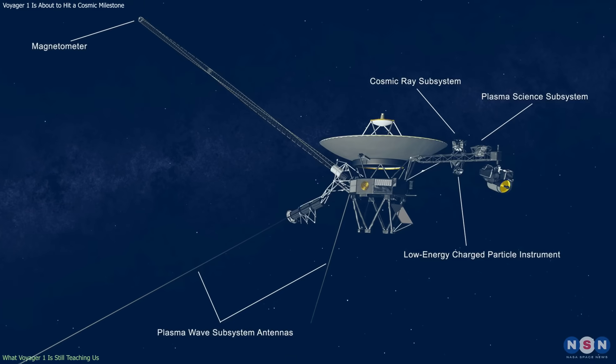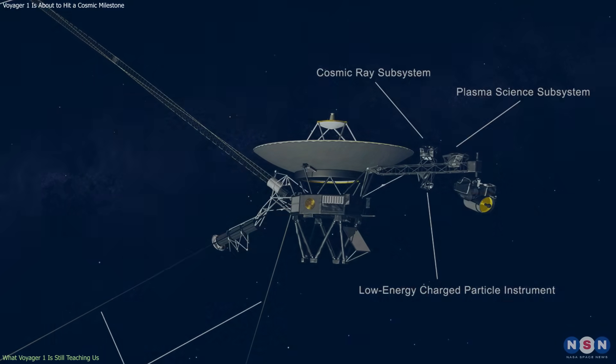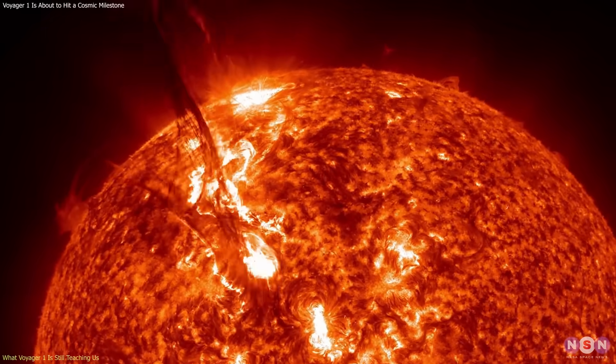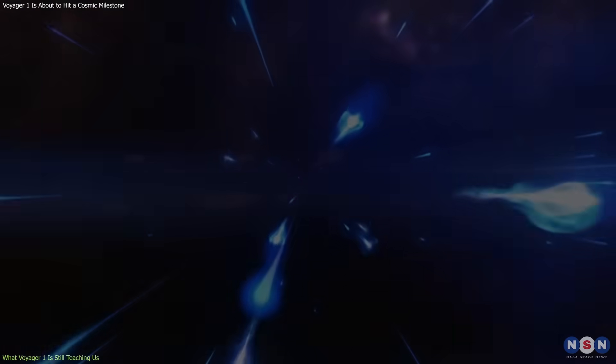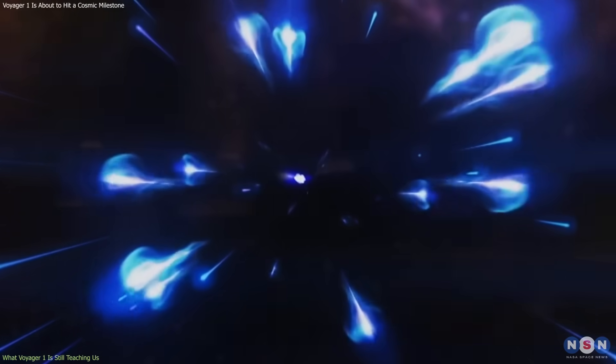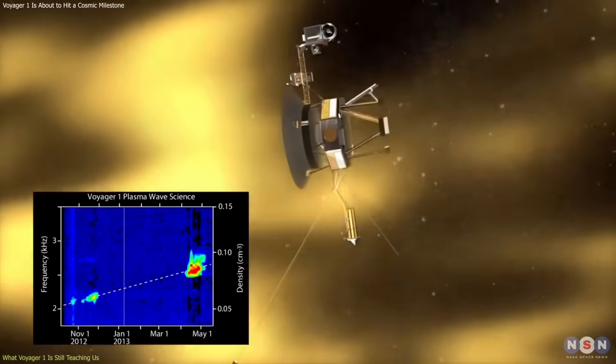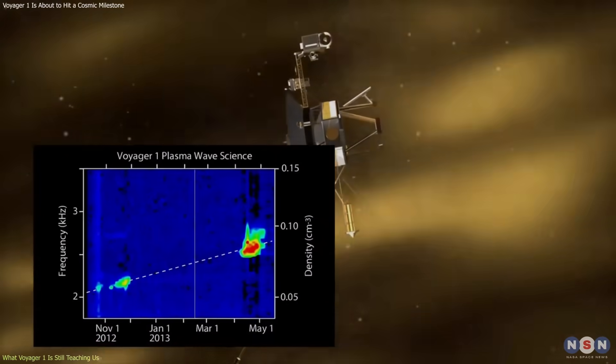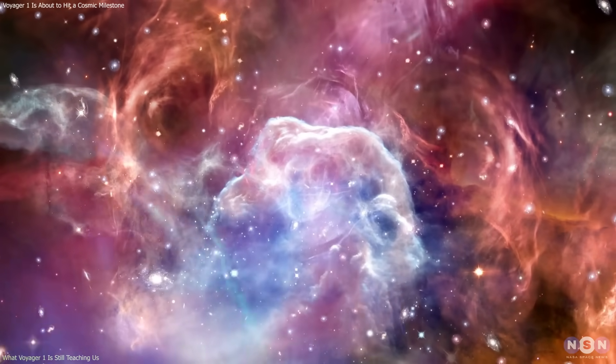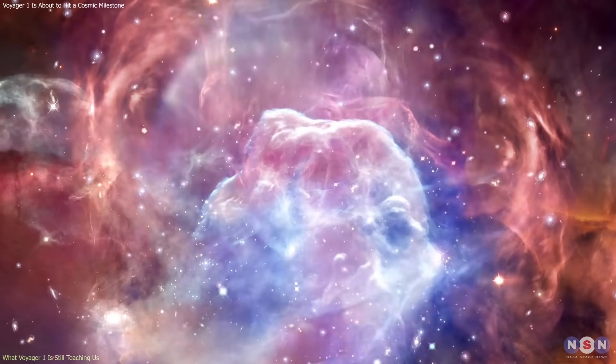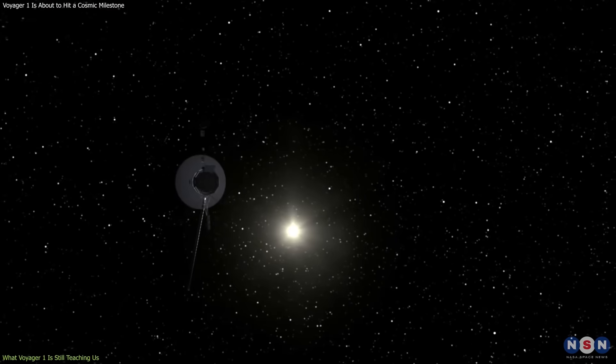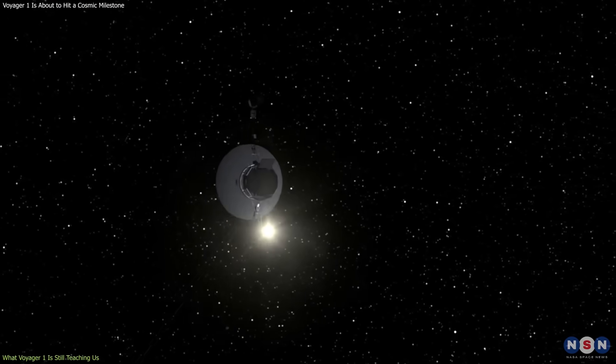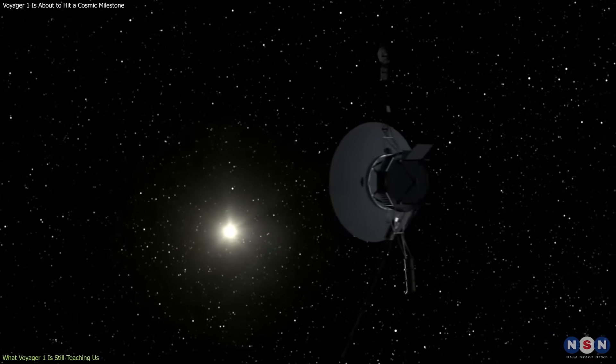The probe's plasma wave instrument has revealed pressure waves from solar eruptions propagating far beyond the heliopause, while its cosmic ray detector continues to study high energy particles that originate outside the solar system. Together, these data help refine models of how energy, radiation, and magnetic fields move through the interstellar medium. Voyager 1's resilience has also turned it into a lesson in long-term engineering.